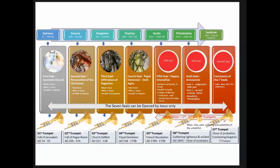This is what our study will look like. The first seal is related to the first church, and the first trumpet also has a connection to it. Smyrna is the second seal, Pergamum is the third seal, Thyatira is the fourth seal, Sardis is the fifth seal, and Philadelphia leads into the conclusion of the seven seals. The trumpets also fall into the same time frame. The fifth trumpet is the French Revolution, the sixth trumpet is the gathering of the righteous and the wicked from AD 1844 to the close of probation, and the seventh trumpet is the close of probation and the everlasting kingdom, which is future. Once we finish this series, we will go into the trumpets.